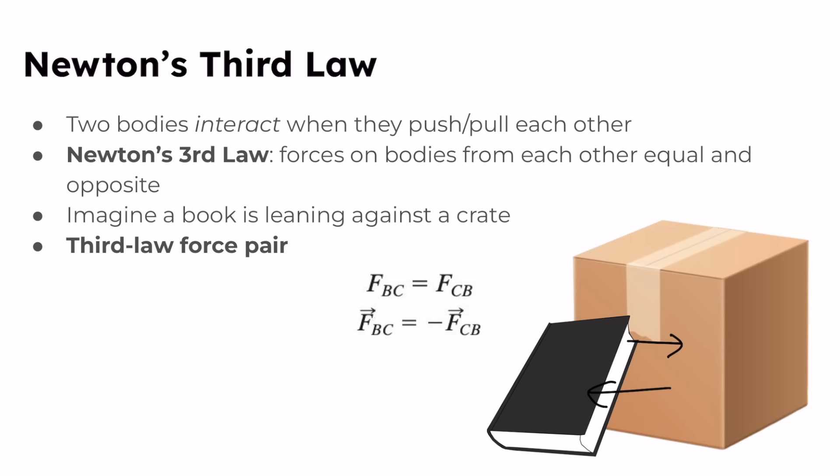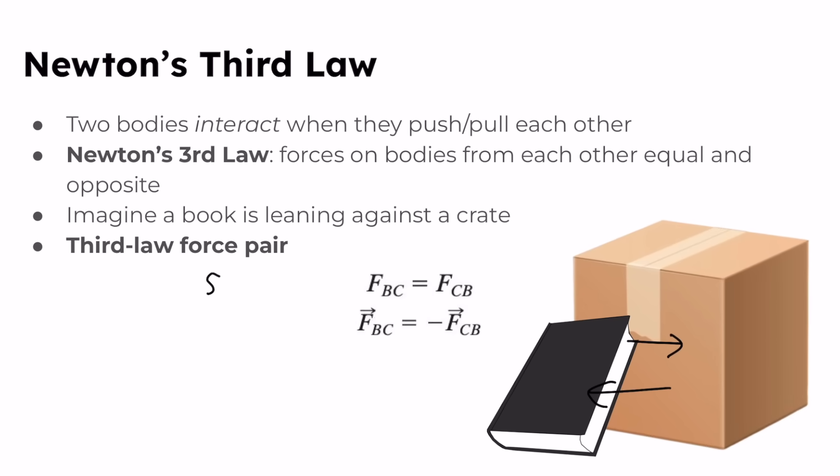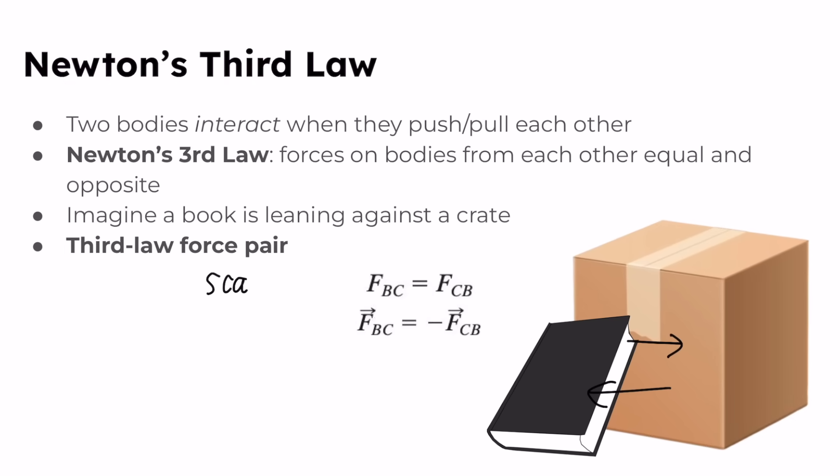For the book and the crate, we can describe the relationship with each other as the scalar relation. Their scalar magnitudes are the same. This relation says that they are equal, but they are opposite in direction. Here is the negative sign that tells us that they are opposite in direction.